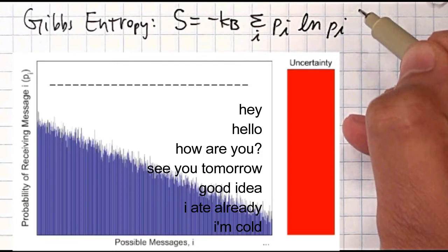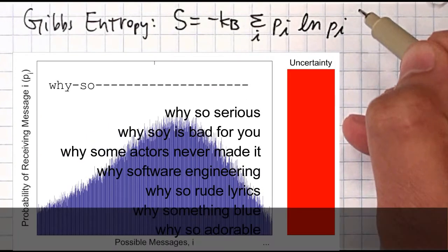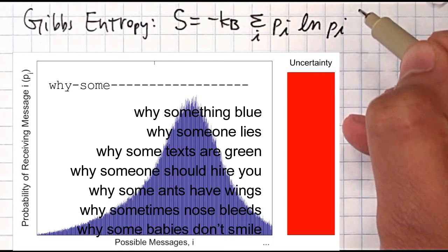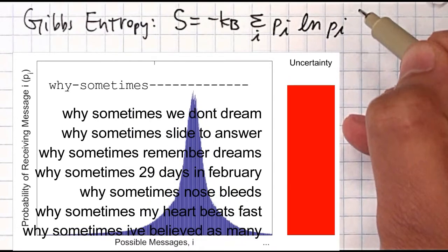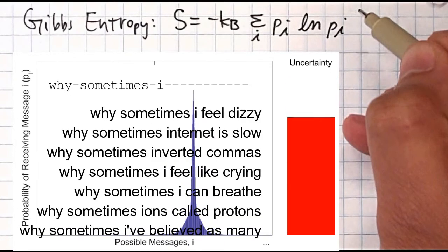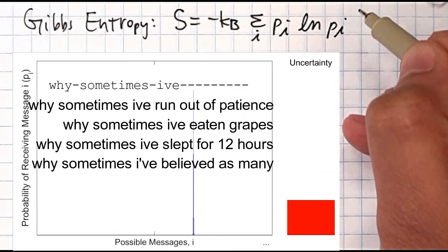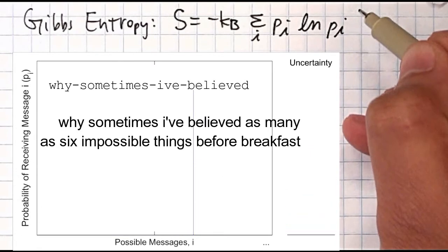As you receive the message word by word, you gain information, and this causes the probability distribution to shift. This decreases your uncertainty about what the message is, until you've narrowed it down to one statement with 100% probability, and your uncertainty is zero.